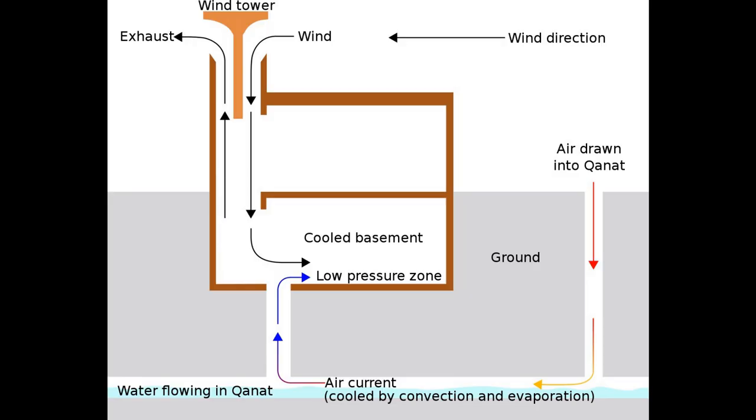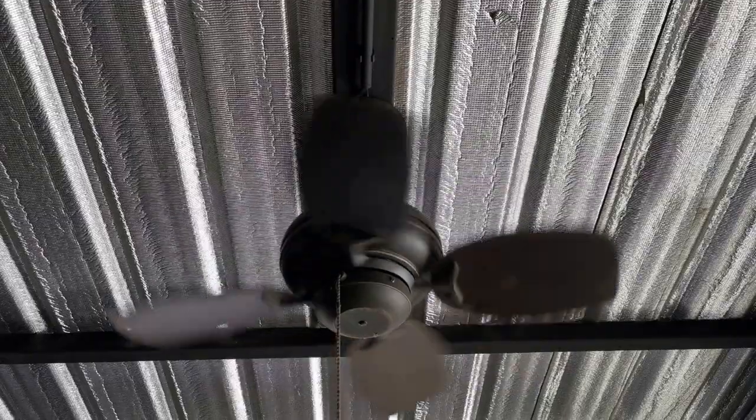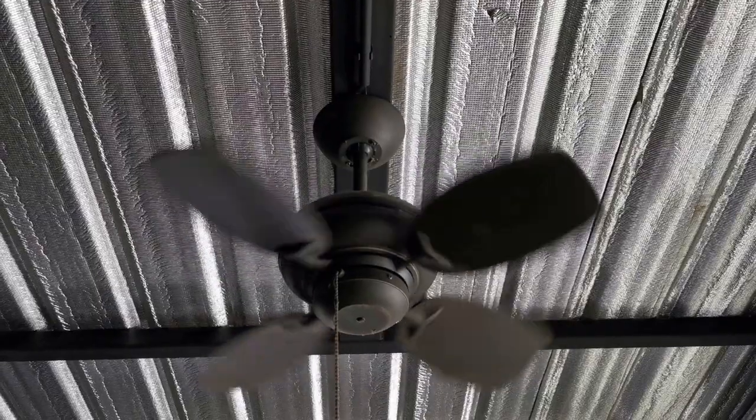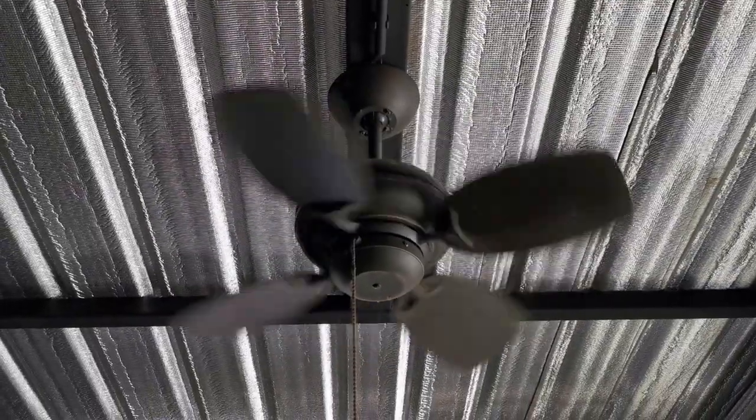Good examples of passive cooling would be the Iranian heat tower or even the Earthship. Ventilative cooling is the one we've already looked at — it's using some mechanical means to move the air around to cool the indoor space. A sash window is a good example of this, as is a punkah, as is an ordinary fan.